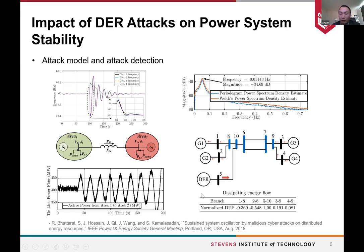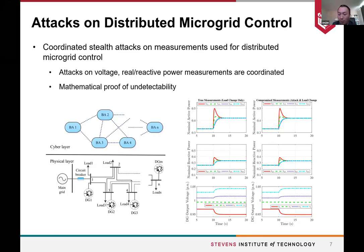If the magnitude is large enough, the protection system may operate and disconnect components. To address this problem, we have an attack detection approach based on domain knowledge. By implementing the dissipating energy flow approach, we can identify the source of this type of attack, and if we disconnect that source — such as the DER at bus 5 — we can reduce the oscillation and address the system stability issue.